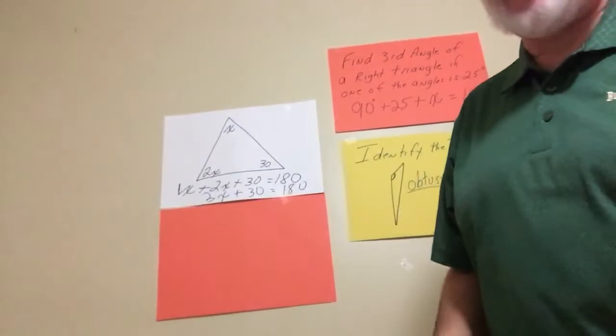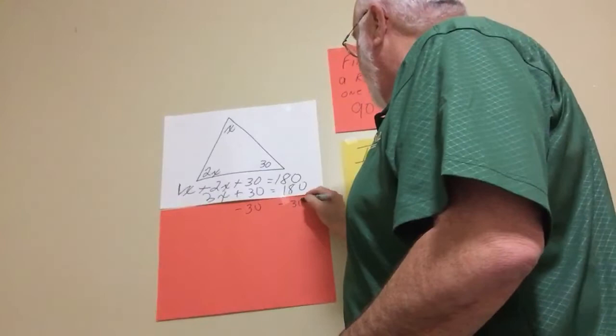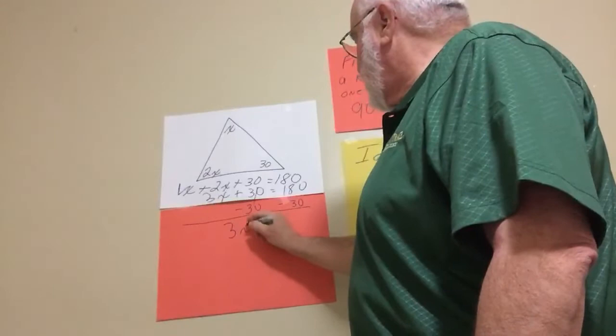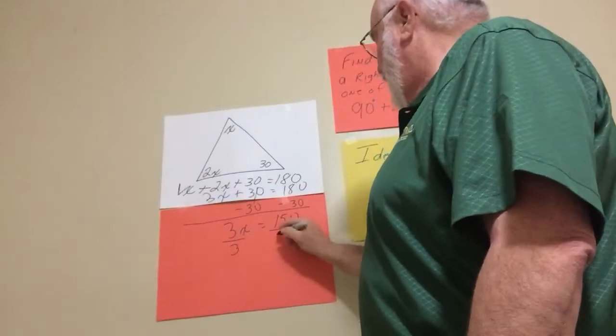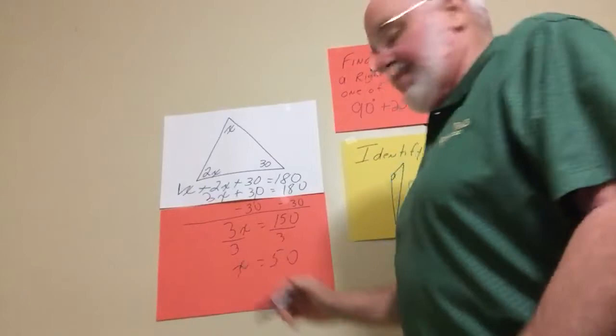So we subtract 30 from both sides. Divide by 3, divide by 3, x equals 50.